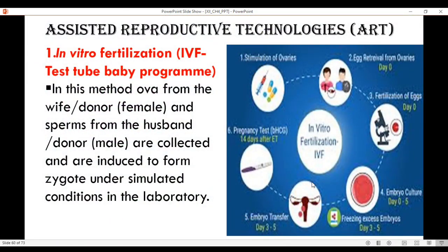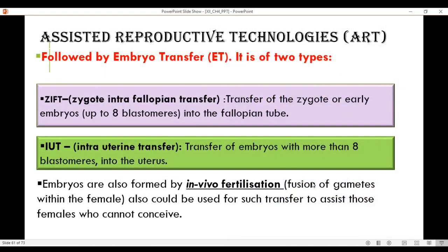In vitro fertilization (IVF), otherwise called the test tube baby program: couples who are unable to produce their baby can donate their gametes — the female provides her ovum and the male his sperm — or they can depend on donors. The gametes collected are induced to form a zygote under simulated conditions in the laboratory. Once the zygote is formed, it is allowed to multiply to form an embryo, which is then transferred back to the mother's body for fetal development. This is called an embryo transfer.